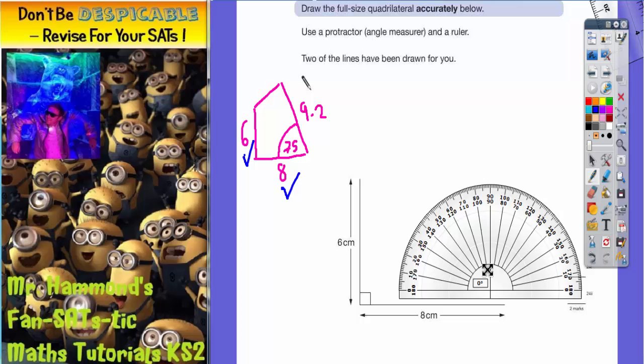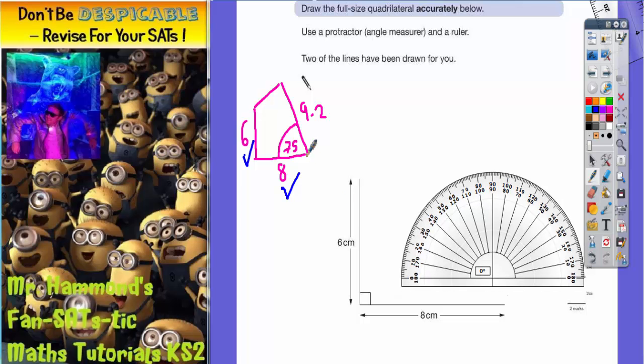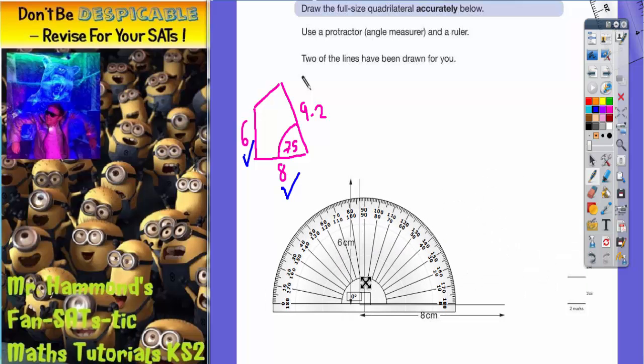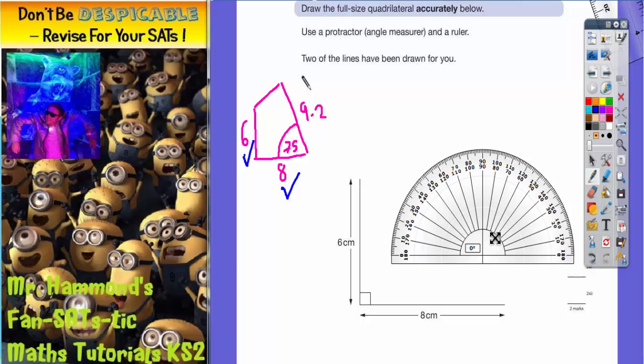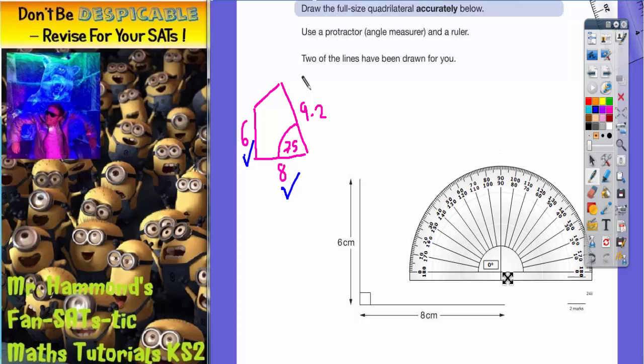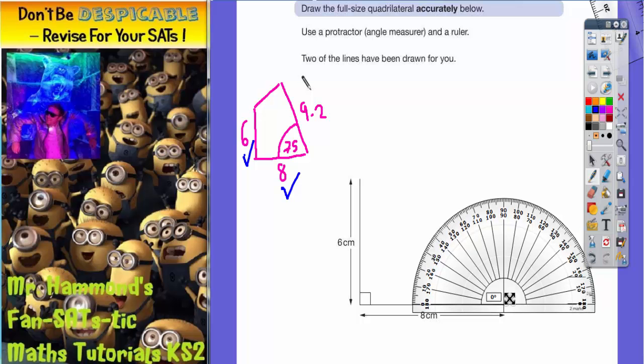The 75-degree angle comes from the bottom right corner of the shape, so it's pointless putting the protractor on the bottom left corner. The center of my angle measurer needs to go on the bottom right corner. There's a zero at each end, so I need to decide which one to measure from.